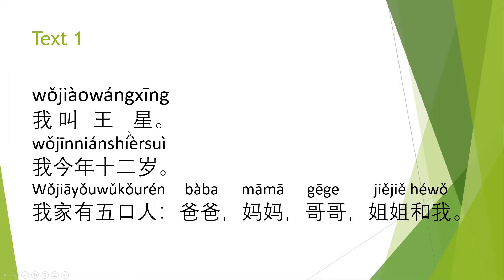我叫王兴 — I'm called Wang Xing. 我今年十二岁 — I'm 12 years old this year.